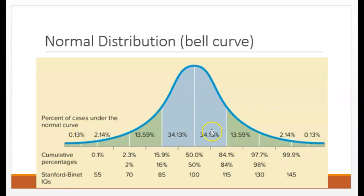Slightly more than two-thirds of the scores fall between 85 and 115. Only about 1 in 50 individuals has an IQ higher than 130, and only about 1 in 50 individuals has an IQ lower than 70. People in those extremely high or low ends of the distribution typically need specialized education, such as additional help and instruction on the low end, and more advanced and challenging instruction on the high end.